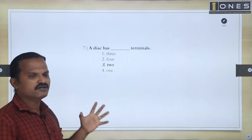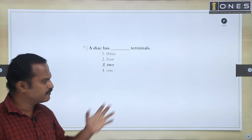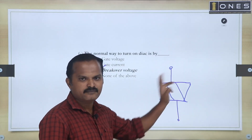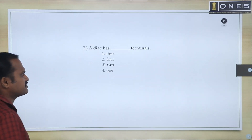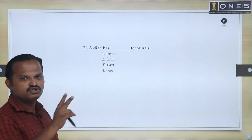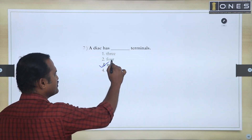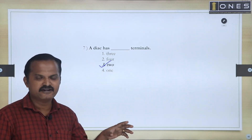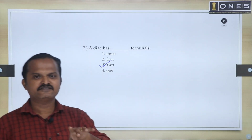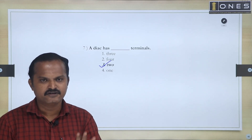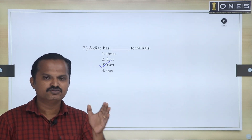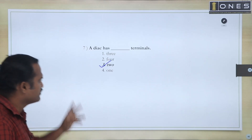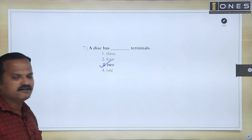Seventh question: A DIAC has how many terminals? Looking at its structure, it has MT1 and MT2. So the answer is: a DIAC has two terminals. It is a two-terminal device. DIAC plus a gate terminal becomes a TRIAC. The answer is two.